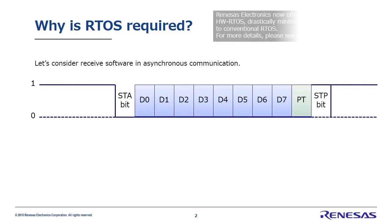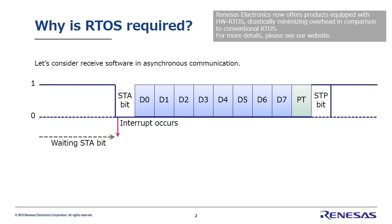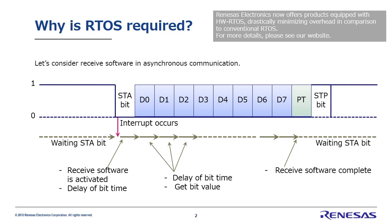So how should receive software be built? First, let's set it up so that when the start bit is detected, an interrupt occurs. When this interrupt occurs, the receive software is activated. When the receive software is activated, it waits the length of the start bit and then starts sampling the data. Then it waits for another one bit of time and samples again. This repeats a total of eight times, allowing for reception of eight bits of data.